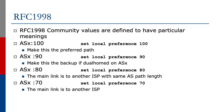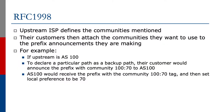A local preference of 100 is the preferred path. 90 indicates a backup if dual-homed onto that particular AS. 80 indicates the main link is probably on another ISP with the same AS path length, and 70 means the main link is to another ISP. The upstream ISP defines which communities are going to be used, and customers then attach those communities to the prefix announcements they are making.